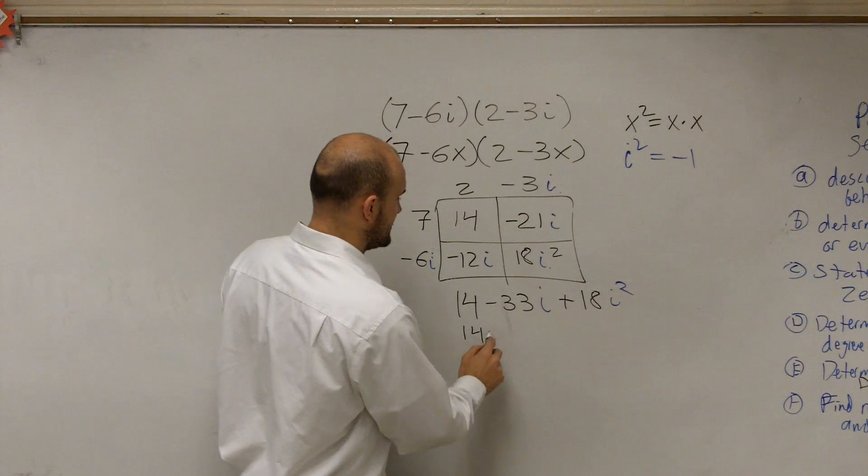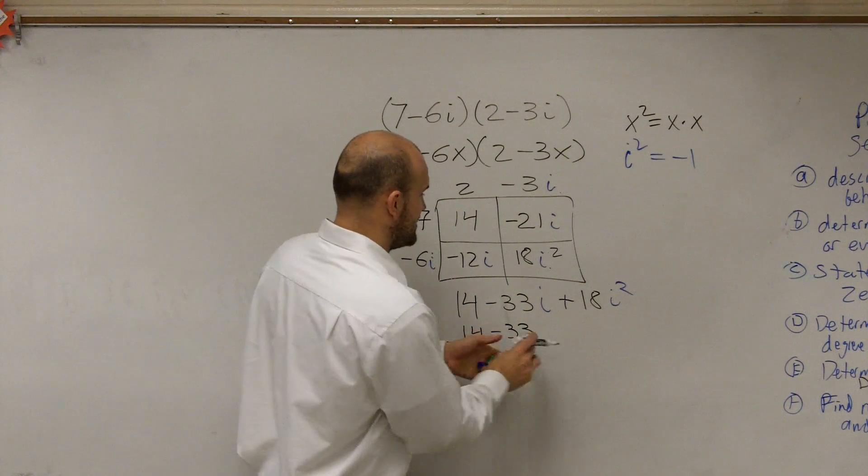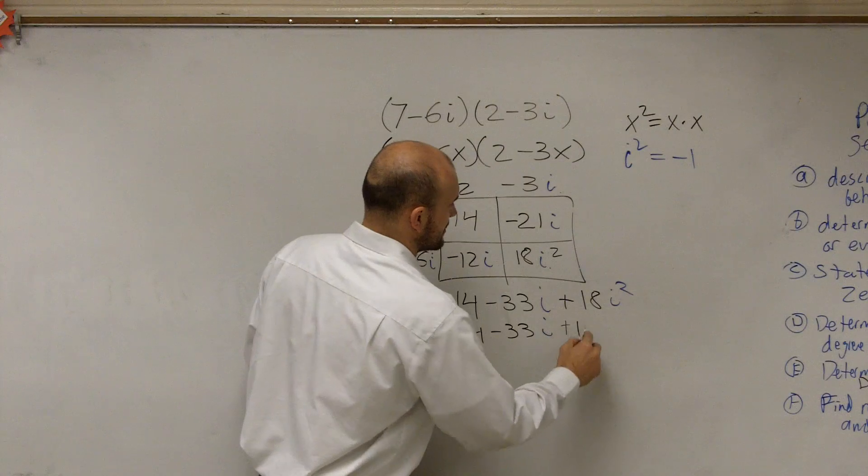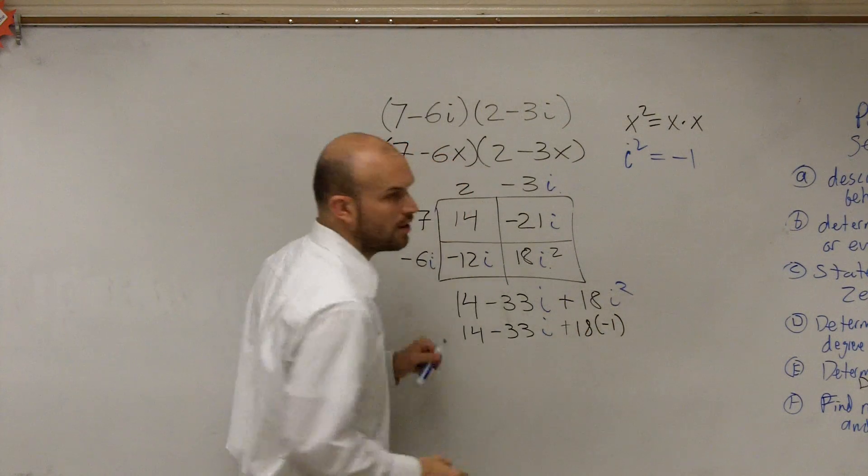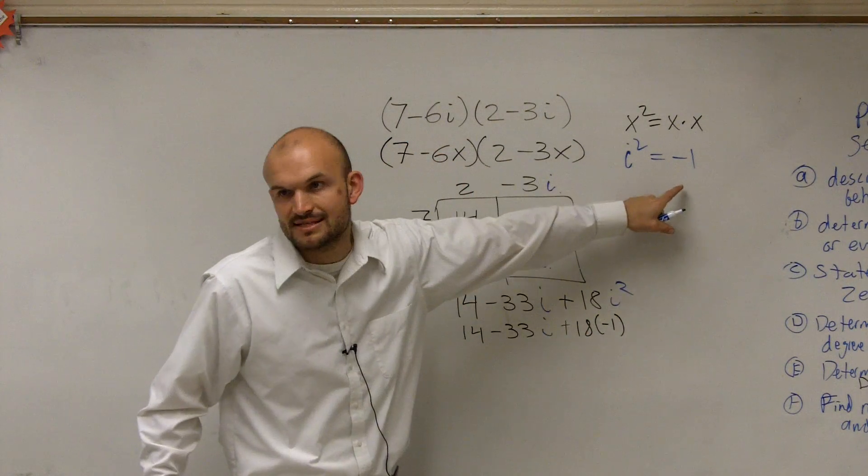So when you're evaluating for this expression, you're going to have 14 minus 33i plus 18 times negative 1. Because i squared, we say, represents negative 1.